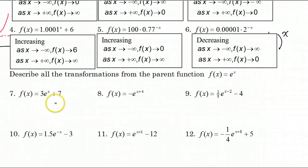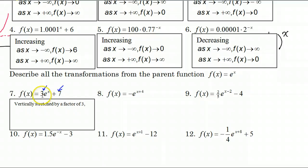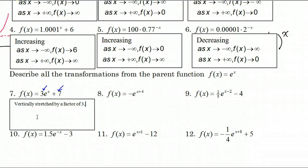We need to describe all of these transformations based on the parent function e to the x power. There are two transformations. What the 3 is doing — the a value — is going to be a vertical stretch. Specifically, it's being vertically stretched by a factor of 3. And the 7 is shifting the graph up 7. So: vertically stretched by a factor of 3 and shifted up 7.